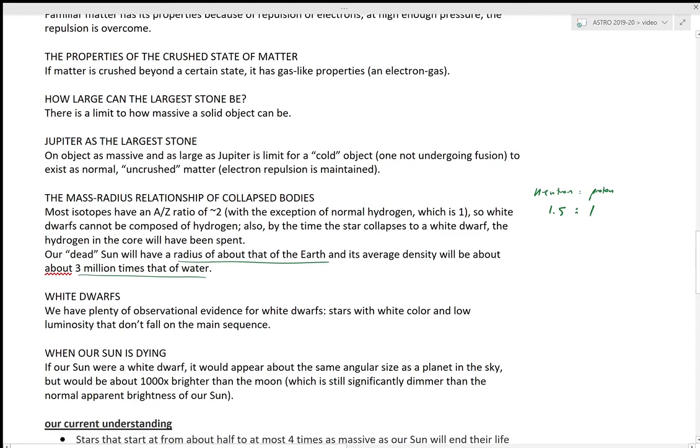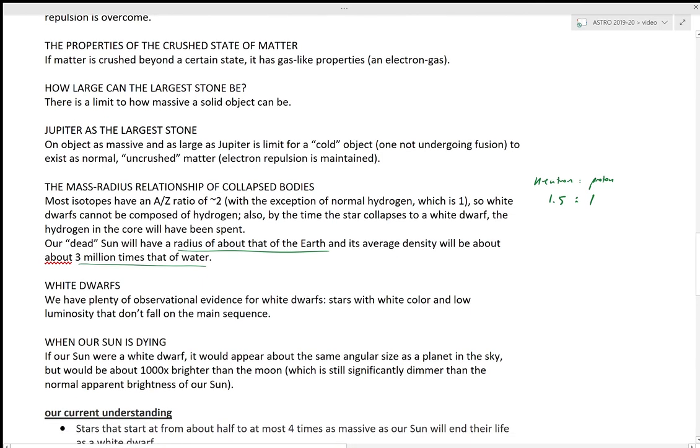So we call this a white dwarf and we do have observational evidence for white dwarf stars. They have a white color and low luminosity which means they are probably small considering the Stefan-Boltzmann relationship. Luminosity of a star is proportional to the radius squared times temperature to the fourth. If the temperatures for white dwarfs are rather high, they are maybe 10,000 Kelvin, then the radius has to be rather small to make a low luminosity.